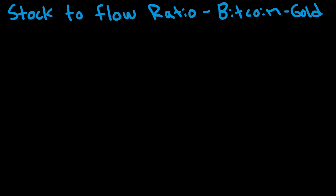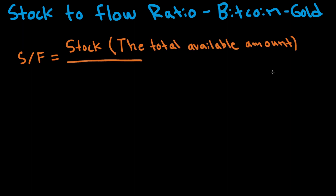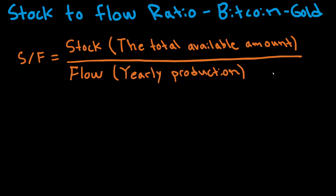Let's start by taking a look at the formula. The stock-to-flow formula, which we can call SF for short, is — as you can hear from the name — the stock of the commodity, which is basically the total available amount, divided by the flow, which is basically the yearly production.